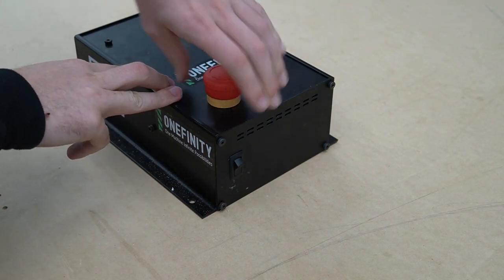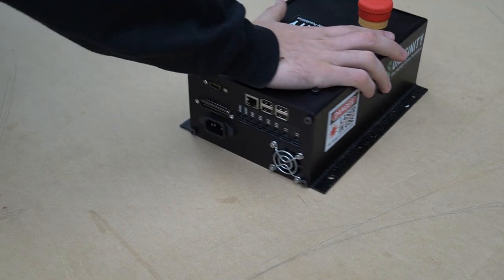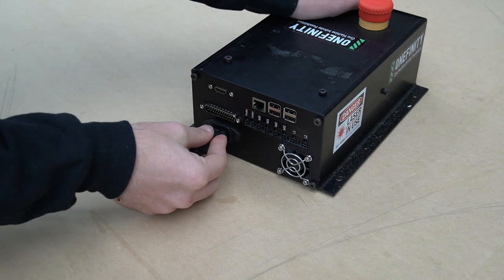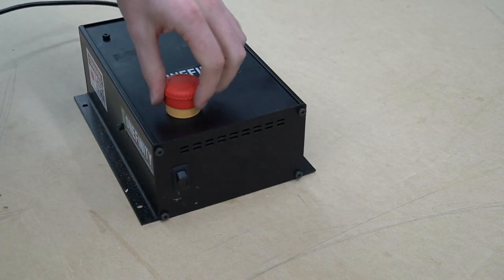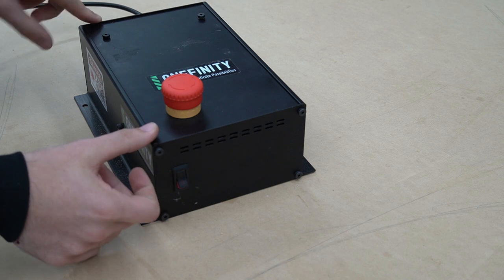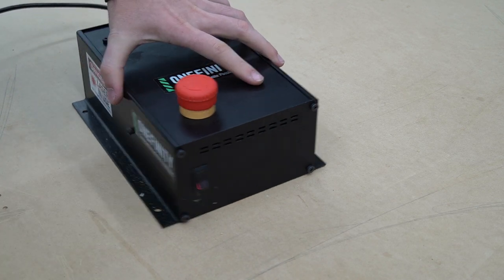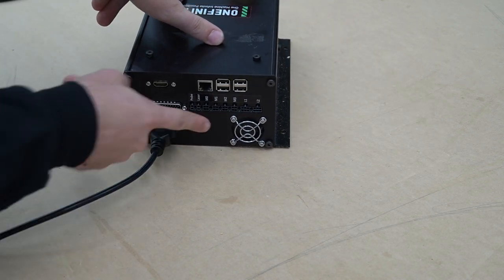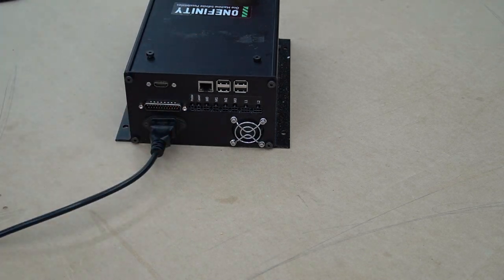With our controller reassembled, we will disengage our e-stop, plug in our power cable, and flip on our power switch. We'll take a look at our fan to make sure that it's running as it should. With our fan running, we can see that our controller is powered up and working correctly. Thank you.